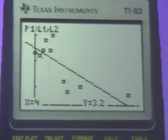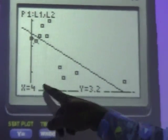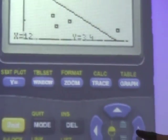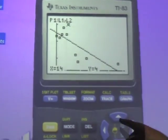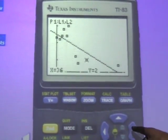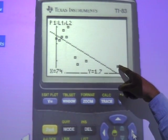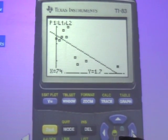And what's nice, if I hit the trace button, notice it gives me these data points, 4, 3.2. And I go over to the right and left, and my cursor goes from one spot to the next, one data value to the next. So it has all the data values on there. But what I want to do is move this cursor to the line. So I hit down.